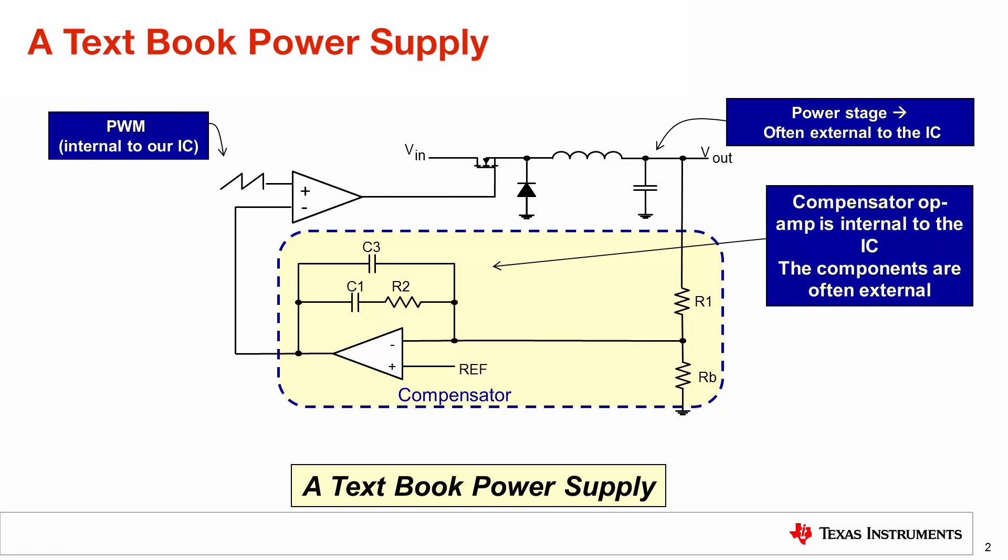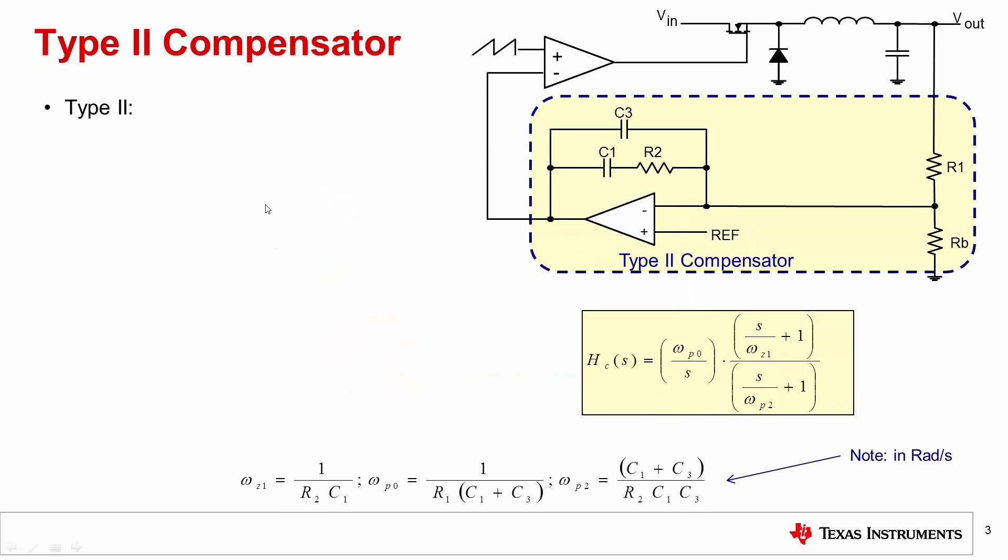The compensator is usually an op-amp and it's internal in the IC and in fact so is the PWM. So, if I look at the compensator from a control theory point of view, i.e. before implementation from a textbook point of view, I have got here something that we call a type 2 compensator.